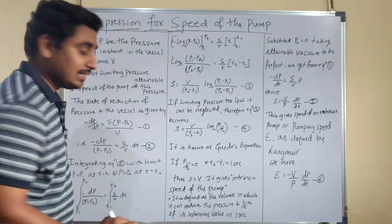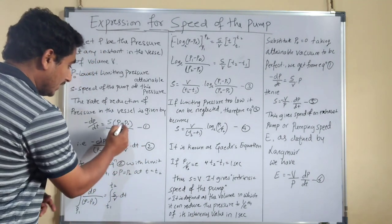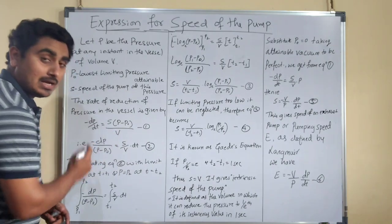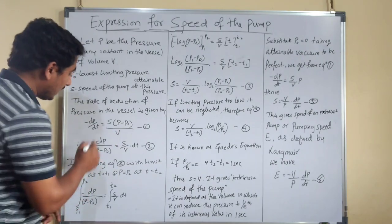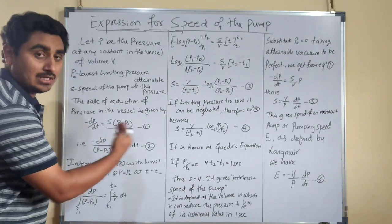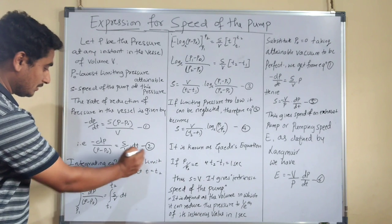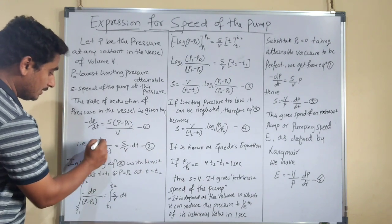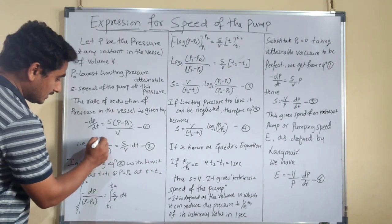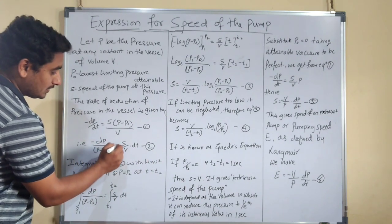Now, taking (P − P0) to the right-hand side and dt to the left-hand side, equation 1 becomes: minus dP divided by (P − P0) is equal to S/V · dt.